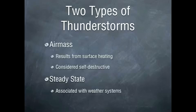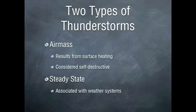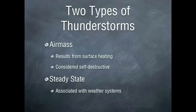Our other type of thunderstorm is the steady state thunderstorm, and that is always associated with some sort of weather system — usually a front, like we learned about in last week's lesson. Remember, a steady state is associated with a front, while an air mass results from surface heating.